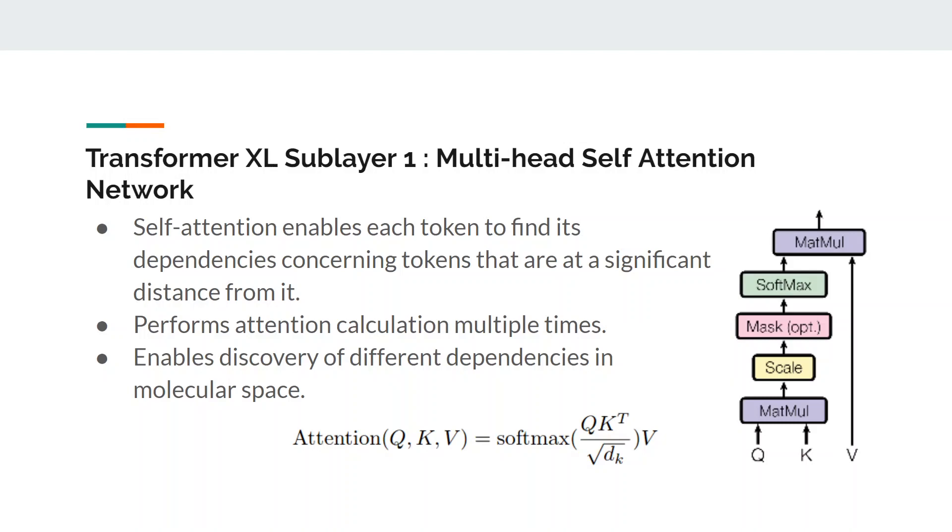Self-attention enables each token to find its dependencies concerning other tokens in a sequence irrespective of the distance between them. During initial calculation, three vectors which are a query vector, key vector and a value vector are created from each input token embedding by multiplying it by three matrices which are trained during the training process. Further, an attention function maps a query and a set of key-value pairs to an output where the output is also a vector. It is computed as a weighted sum of the values where the weight assigned to each value is computed by a compatibility function of the query with the corresponding key. Here, the parameter d subscript k represents the dimensionality of the key vector.